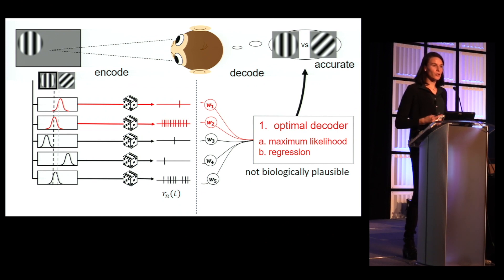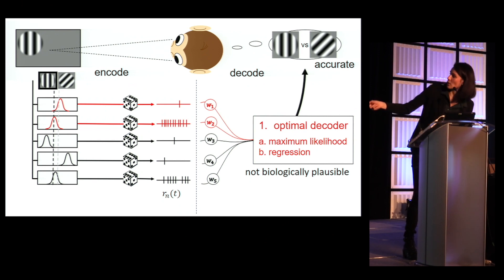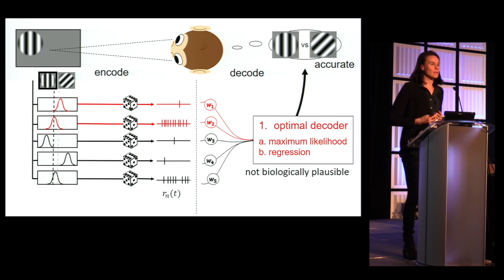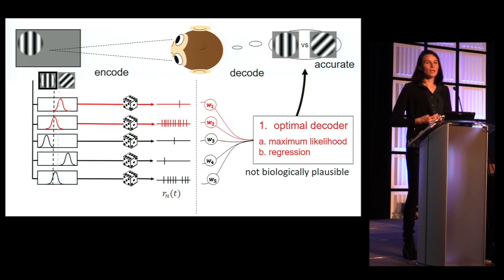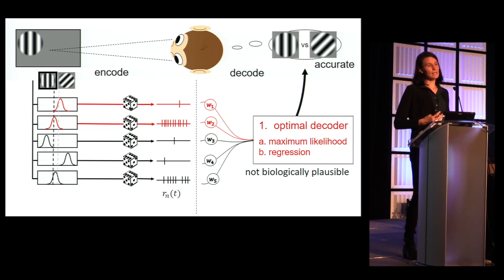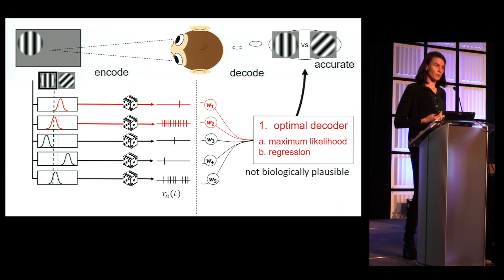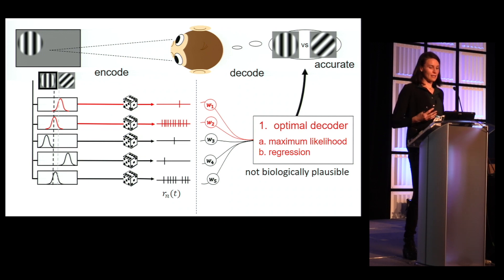However, while both approaches achieve accuracy, they're not necessarily biologically plausible. Maximum likelihood would assume knowledge of the complete probabilistic encoding model and the tuning function of each neuron — it seems impossible that a decoding population would have this knowledge. While regression does not require this from the beginning, it does need a lot of trials to figure out the optimal decoding weights. And we know that monkeys can perform such a task very flexibly and learn fast, so it's not clear that regression would be a reasonable approach either.